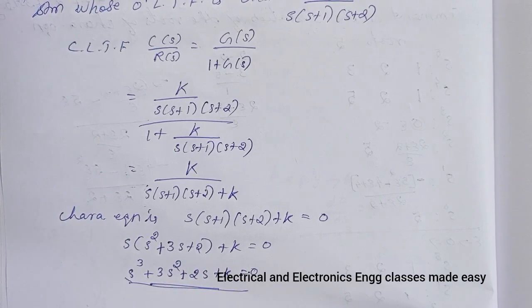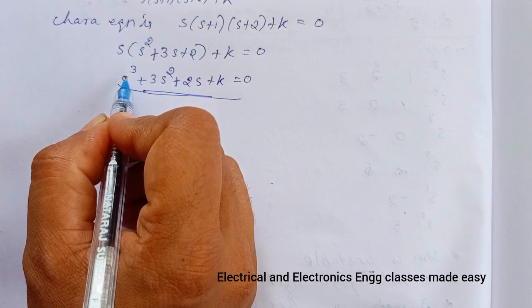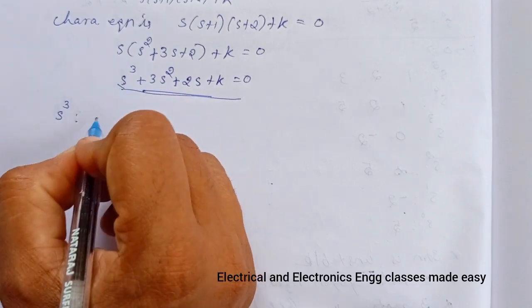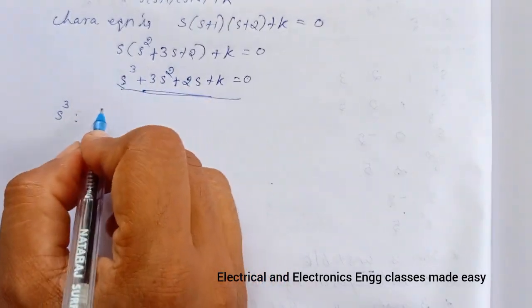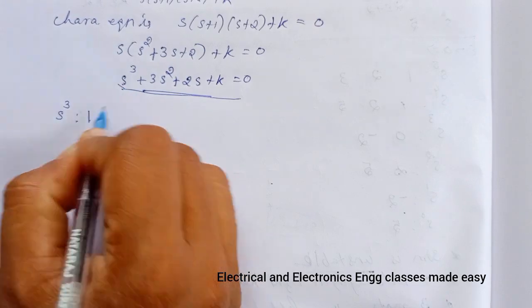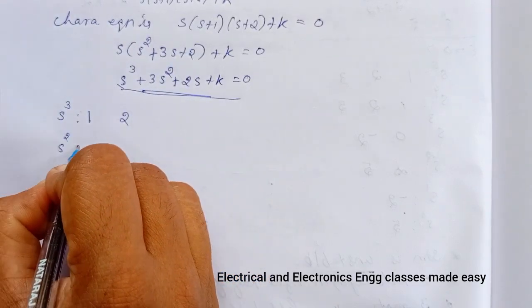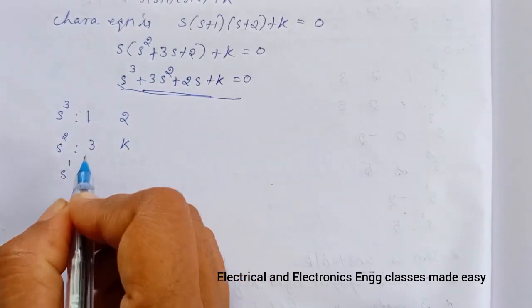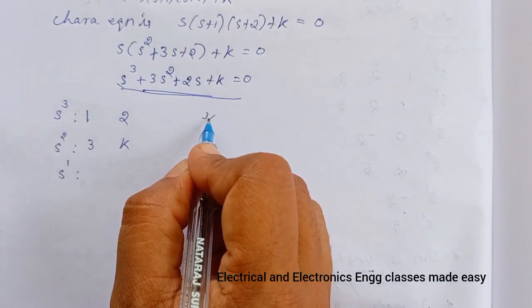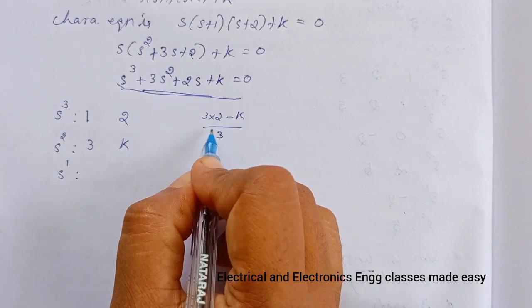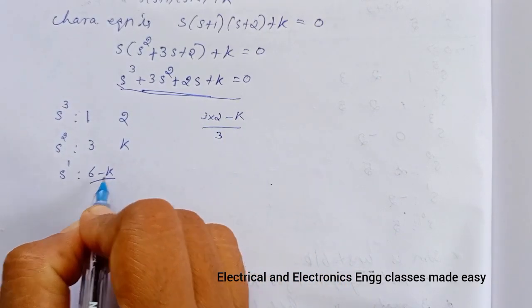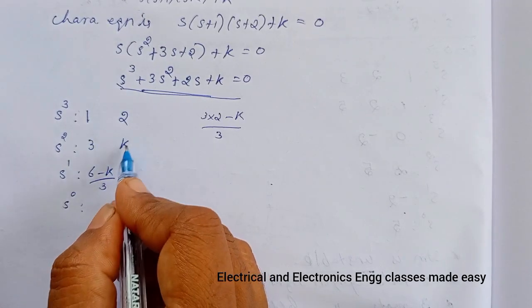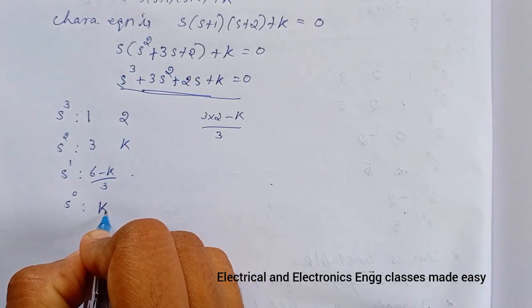The highest power of s is 3, so we construct the Routh array. Row s³: coefficients of odd powers → 1, 2. Row s²: coefficients of even powers → 3, K. Row s¹: (3×2 − 1×K) / 3 = (6 − K) / 3, and 0. Row s⁰: K.